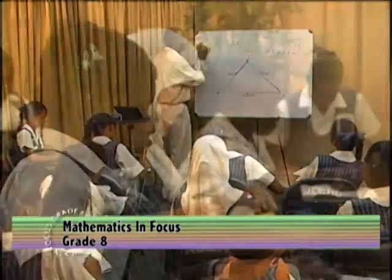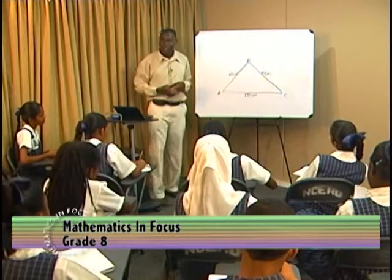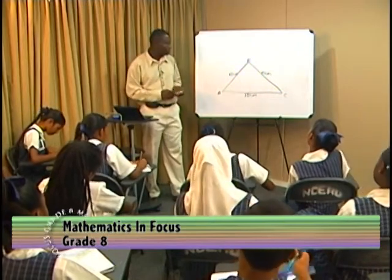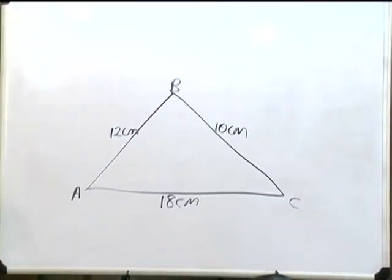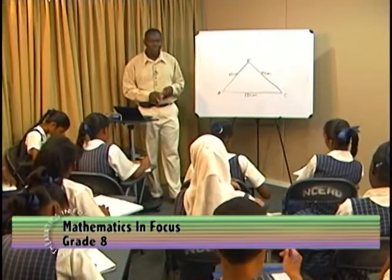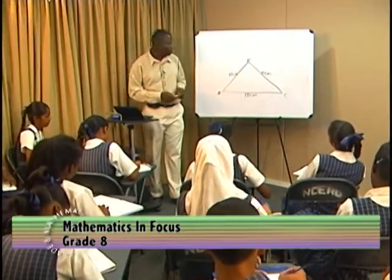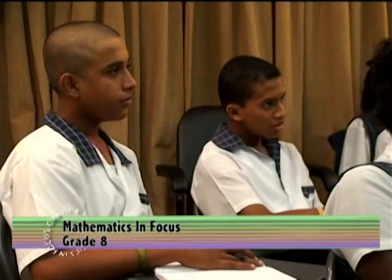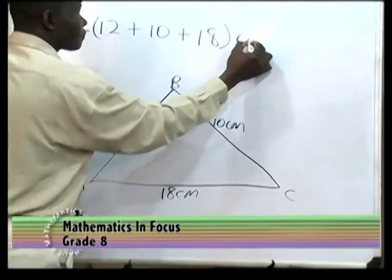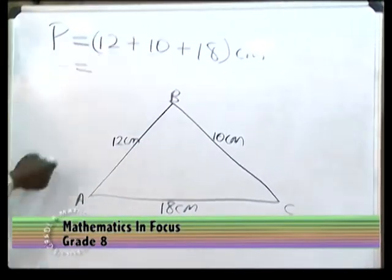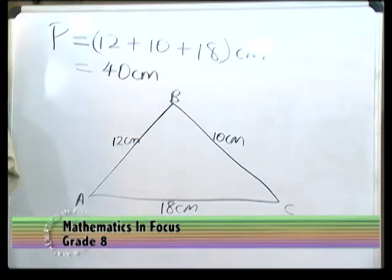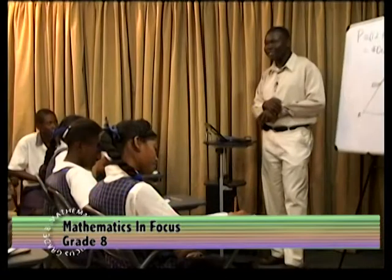We have a second problem on the board here. I'll give you 10 seconds to tell me what is the perimeter of this triangle. Five seconds. 40 cm. Harish is saying 40 cm. Anyone agree with Harish? Yes, sir. All right. A few persons agreeing with Harish — 40 cm. So, the perimeter is equal to 12 plus 10 plus 18 cm. And this will give us 22 and 18, which gives us 40 — correct, 40 cm. So, this perimeter thing is easy. Yes, sir.